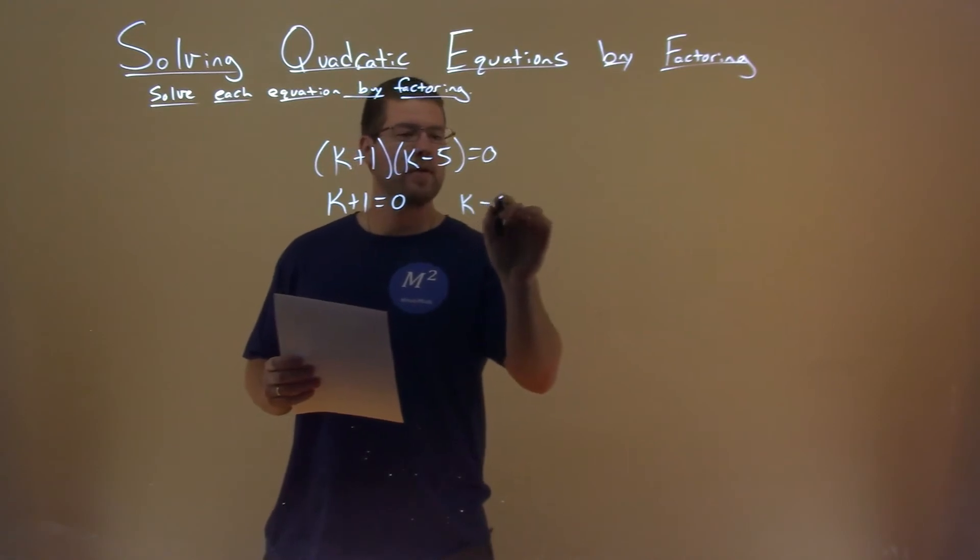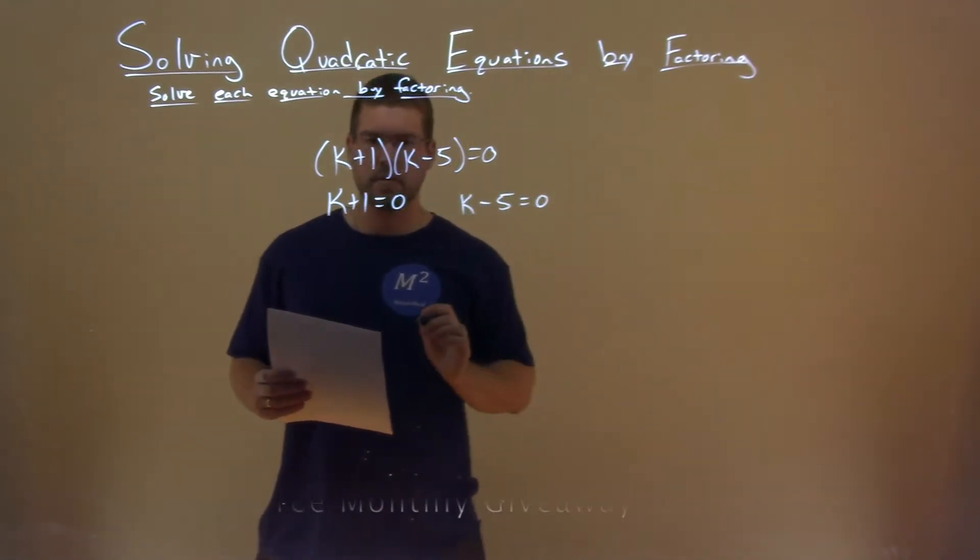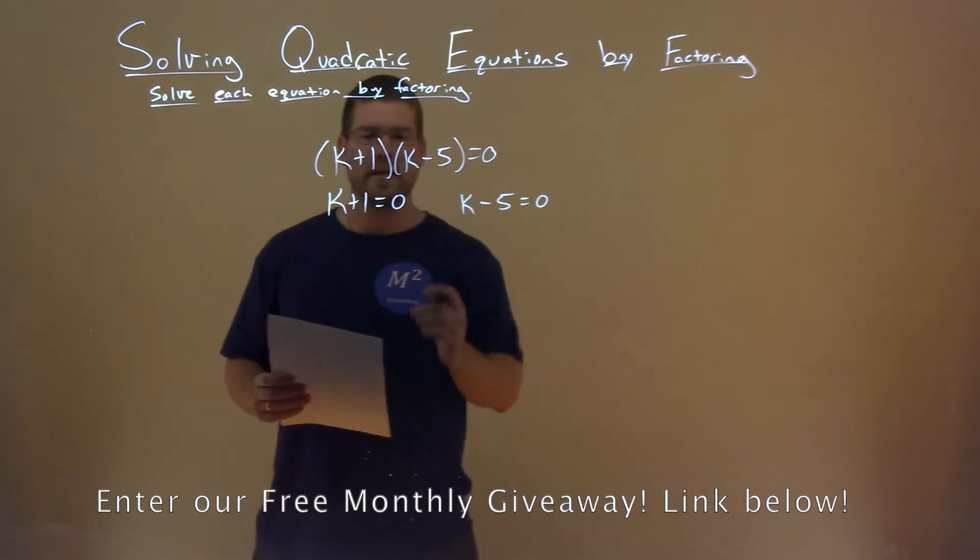So we have k+1 = 0 and k-5 = 0. Now we have to solve each part individually.